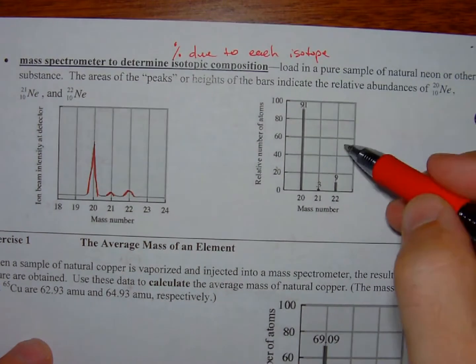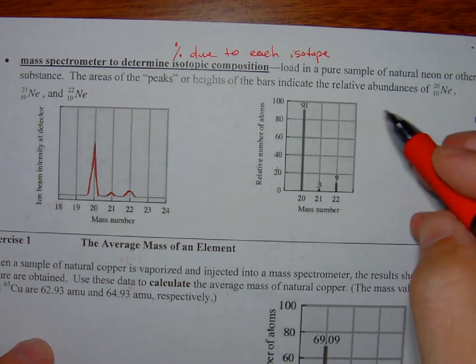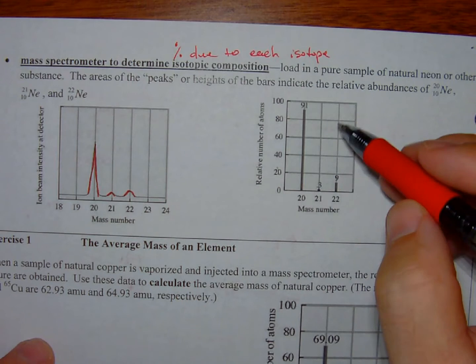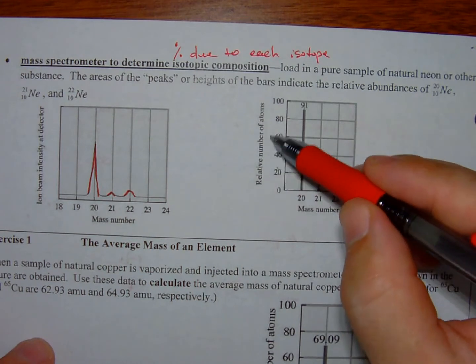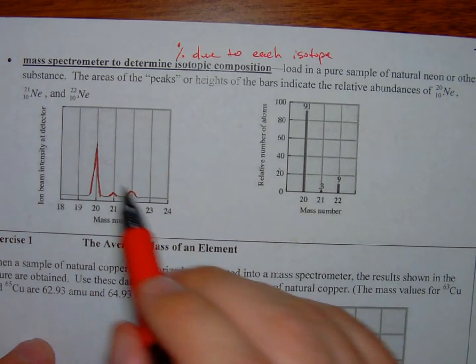So if we switch over to this second graph, this is more of a bar graph, and we see these are percentages. The relative number of atoms in this sample, the mass number. Again, we're talking about neon-20, 21, and 22.